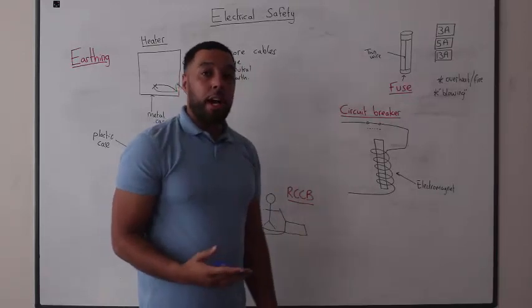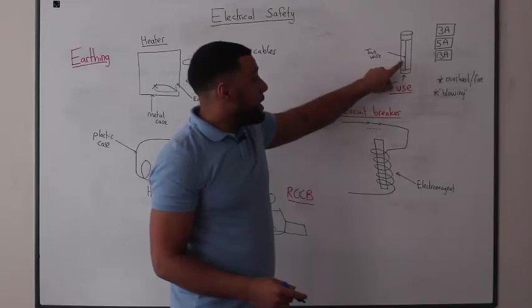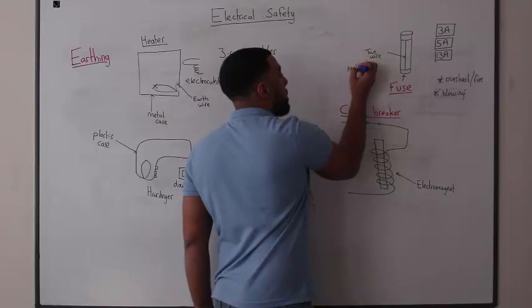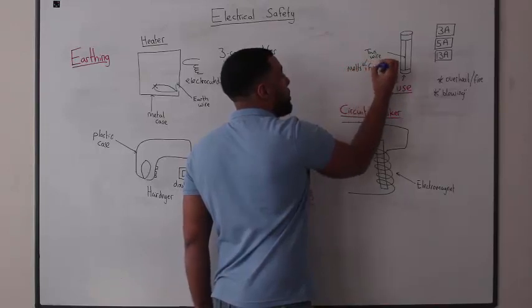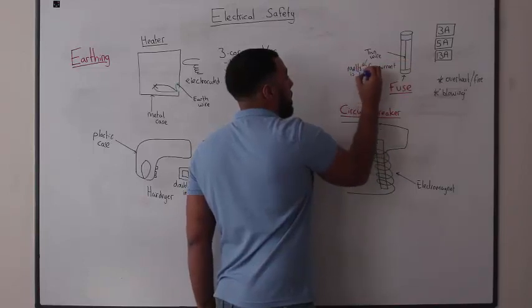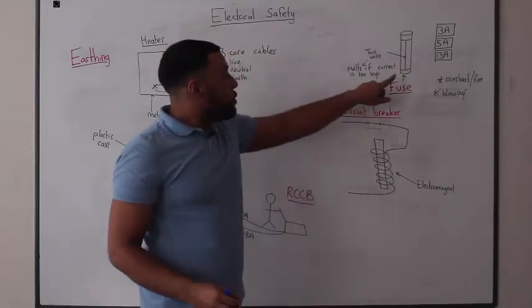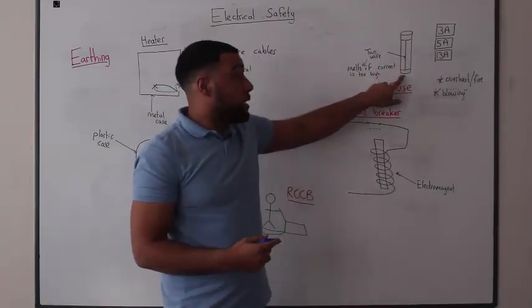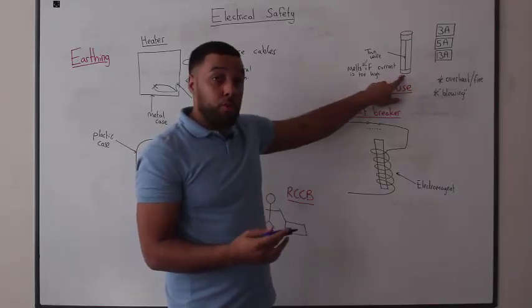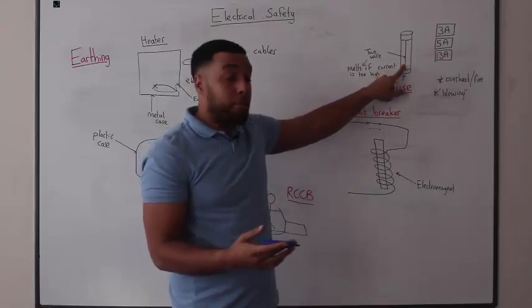Let's have a look at how a fuse works. A fuse contains a thin piece of wire, and that thin wire melts if the current is too high. The fuse should always be placed in series with the live wire, so that if the live wire current is too high, it will blow the fuse, meaning it cuts off the current from our appliance.